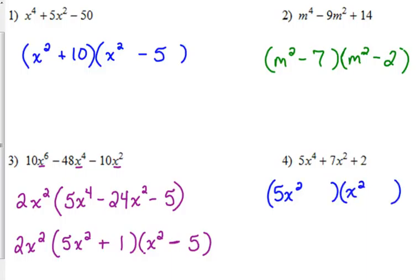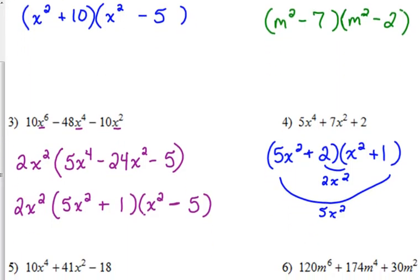Number 4. 5x to the fourth plus 7x squared plus 2. 2 and 1 is our only choice. And I think we need to put it in there, 2 and 1. And they're both positive. And that works because the outside gives us 5x squared. The inside gives us 2x squared. Combine those together, that's where the 7x squared comes from.